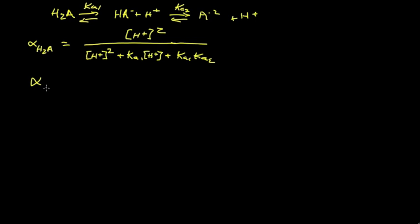For the HA species, the middle species, it's the middle term. So you have the same denominator, and we take the middle term, KA1 H plus.